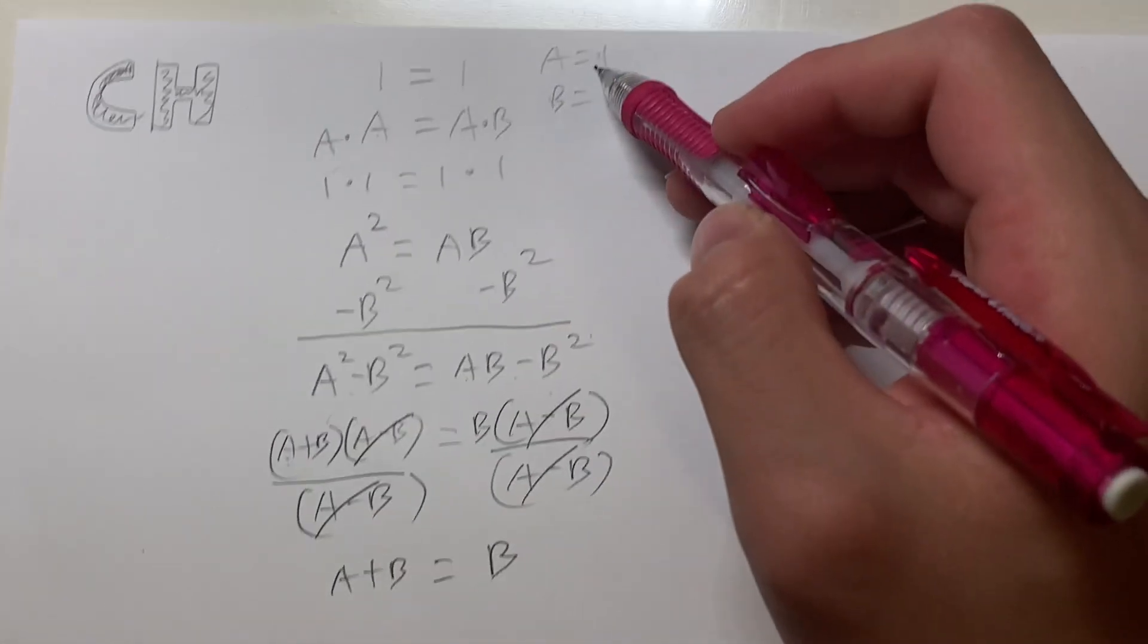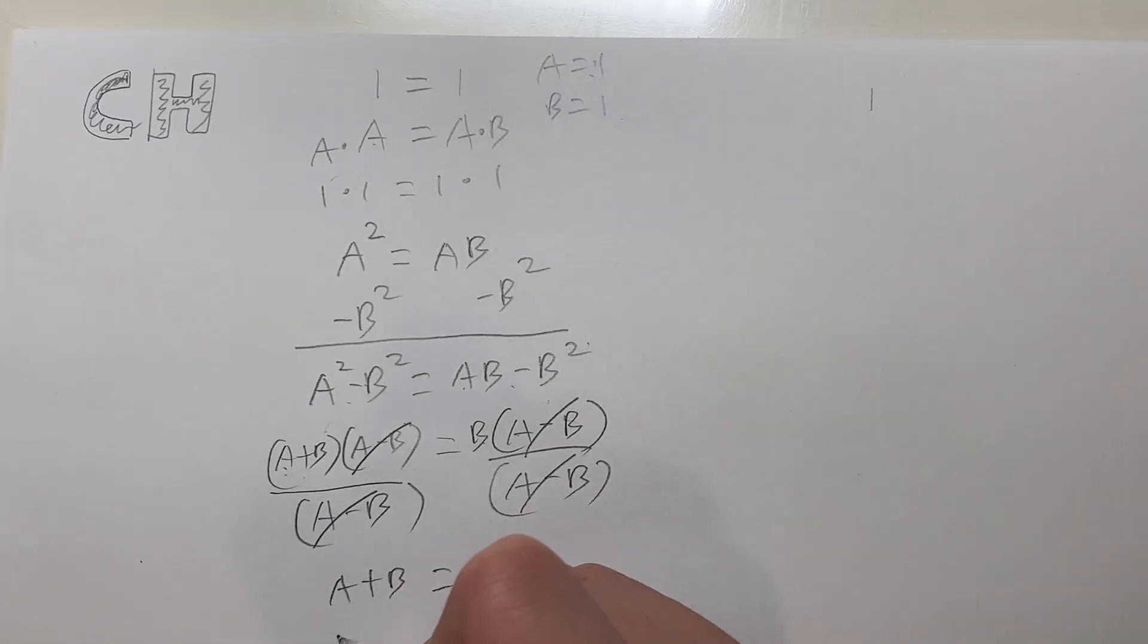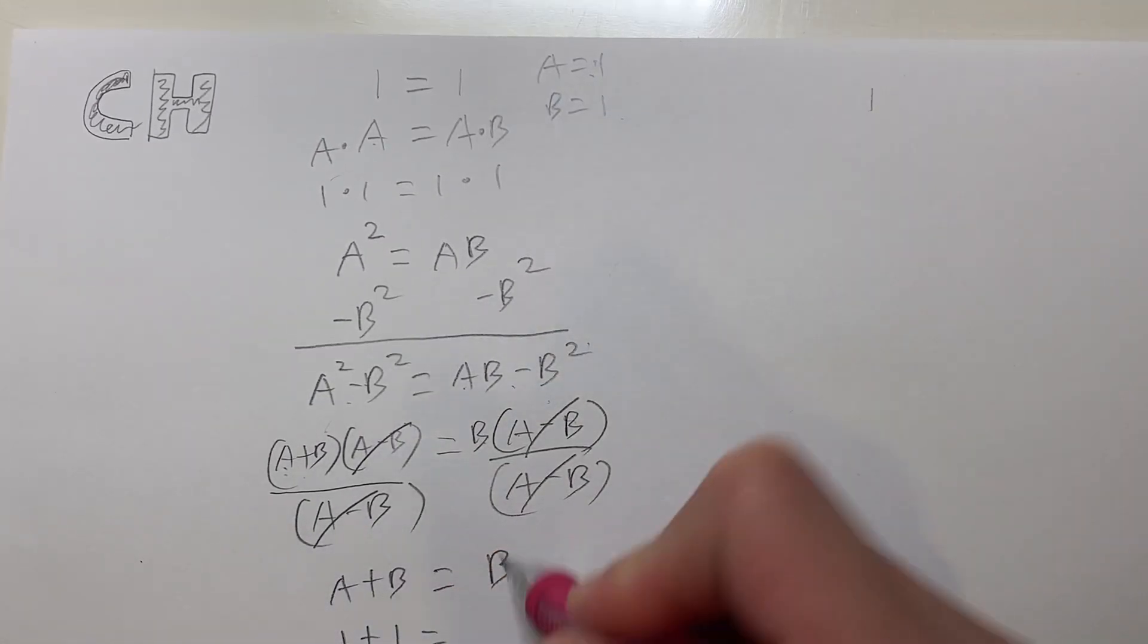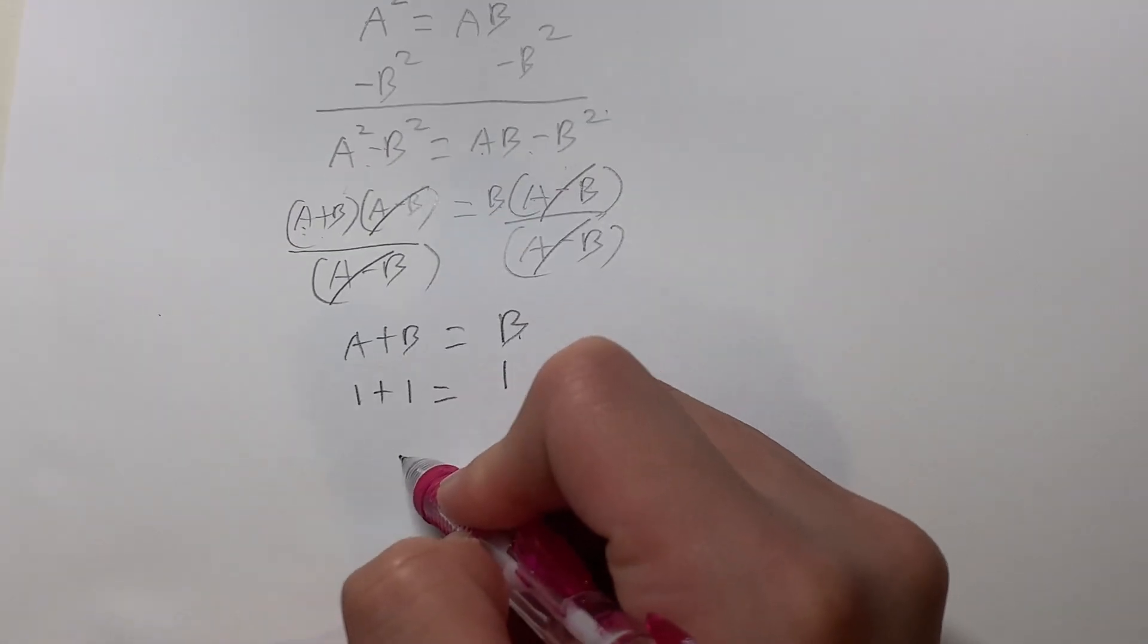Now, since we know that A is equal to 1 and B is equal to 1, substitute, I get 1 plus 1 is equal to B, which is 1. This gives us 2 is equal to 1.